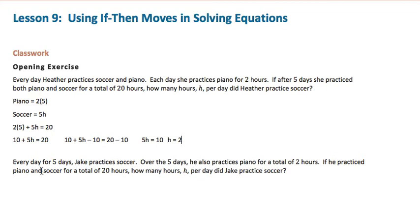Well, hopefully you see a lot of the same numbers. Because they're telling us that piano is five times two, and soccer is five times H, some number. And all together, five times two plus five times H equals 20.